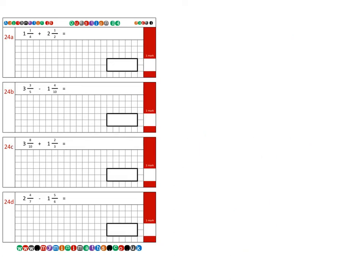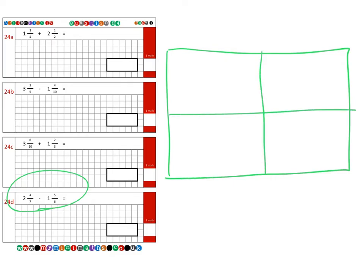Finally, on to the last question which is question 24D. Again we take our box and we're going to take 2 and four-sevenths and we're going to subtract 1 and five-sixths. Again, we're going to make these common, so seven times six is 42. We times this by seven to get the 42, so we do the same with the top.